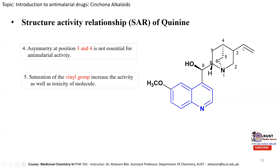Saturation of the vinyl group at position 3 to give an ethyl group increases anti-malarial activity but also increases toxicity. Therefore, it is recommended not to saturate the vinyl group, which shows maximum activity at acceptable toxicity levels.